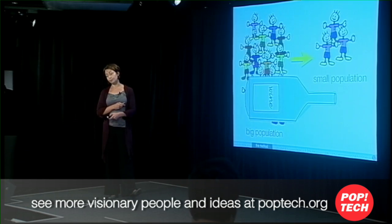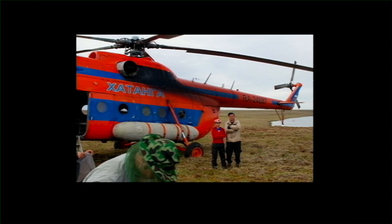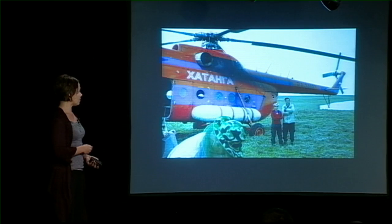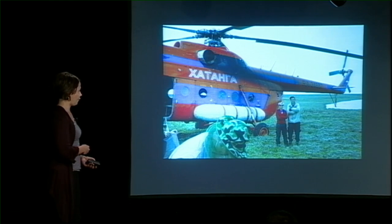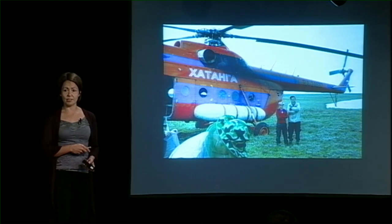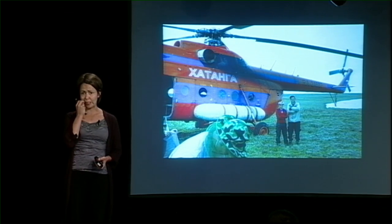We want to be able to sample past and present diversity and figure out when this bottleneck happens. If we can figure out when that bottleneck happened and how tight it was, we can learn something about how the environment is influencing the diversity of these populations. To do this, I go with my friends to ridiculous places. Last summer I went to Katanga, the Taimyr Peninsula — the middle of the Taimyr Peninsula, where there's absolutely nothing. You have to take a Russian helicopter for a very long way.